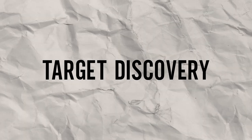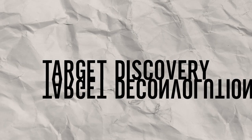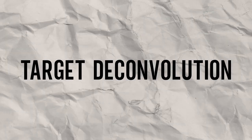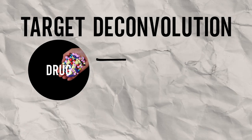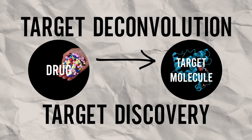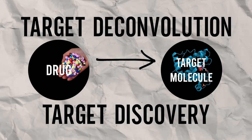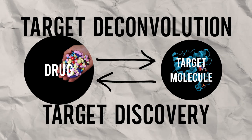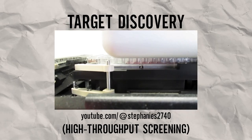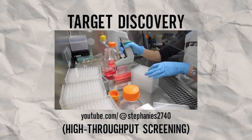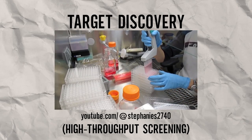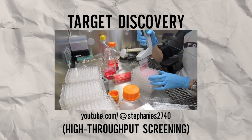The second strategy is target discovery, which is pretty much the reverse of target deconvolution. In target deconvolution, you begin with an effective drug and find its target molecules. However, in target discovery, you begin with the molecules that are known to be related to a certain condition and find compounds that target it. One of the methods used to test and identify targets is by using technology to rapidly test tens of thousands of compounds to identify those that show the properties of a desired drug.